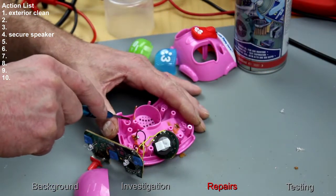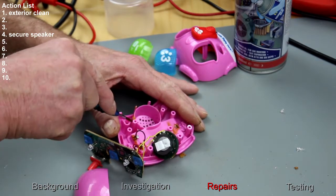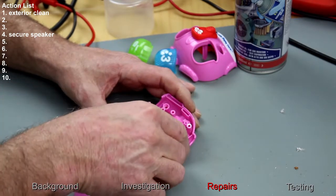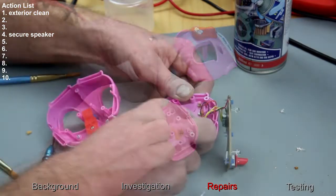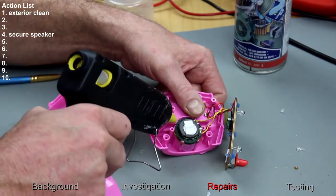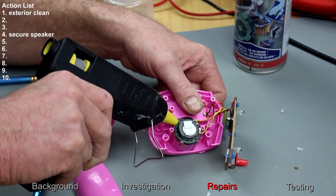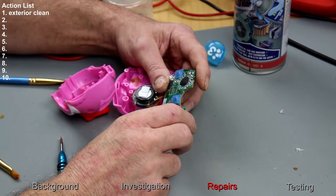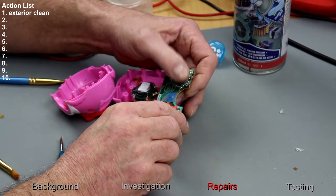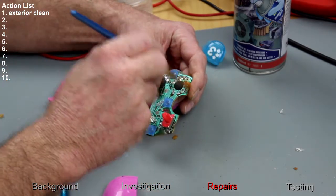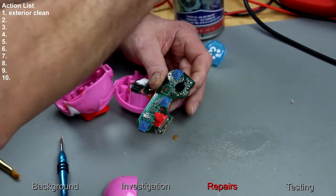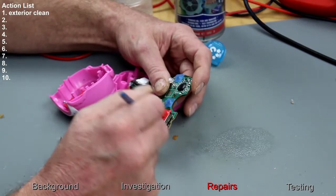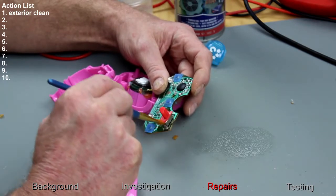The glue holding the speaker in has broken off, so I think I'll hot glue that back into position. The soldering looks okay. A little bit of contamination on the board. Looks like it's got wet at some point as well. Maybe it got washed.